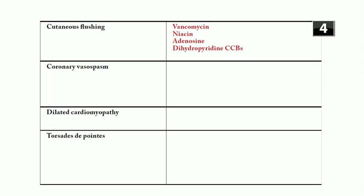Coronary vasospasm can be caused by cocaine, amphetamines, and methamphetamines. Triptan drugs like sumatriptan or ergotamines can also cause coronary vasospasm. This doesn't happen often, but we generally don't give triptans to patients with coronary artery disease or strokes.